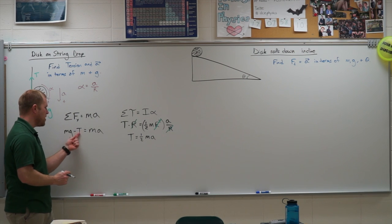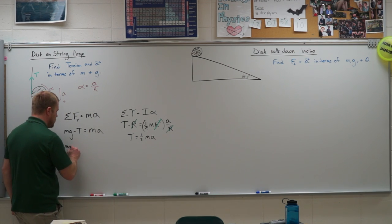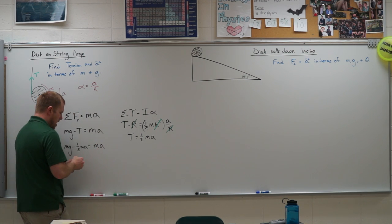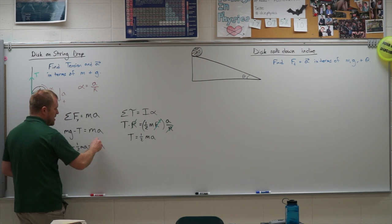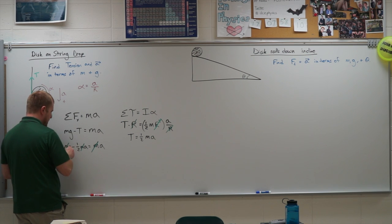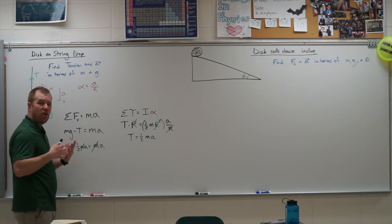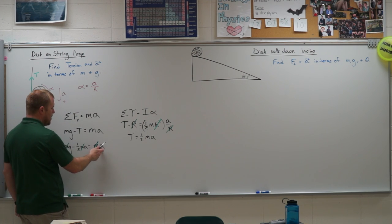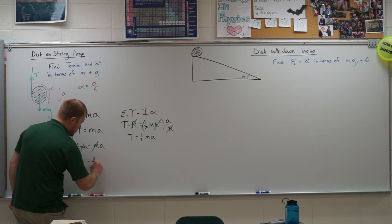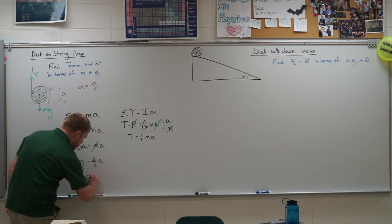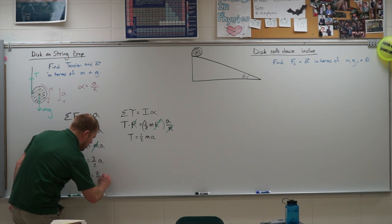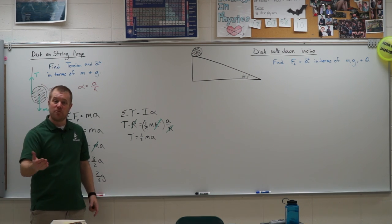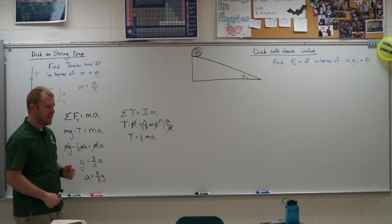Because the string is connected at the outer radius, all the R's cancel out, and I see that tension equals one-half MA. Substituting that into the linear equation gives mg minus one-half MA equals MA. The masses cancel, and solving for acceleration: g equals A plus one-half A, which is three-halves A. So the acceleration is two-thirds g. It is less than g because the object is not in free fall - the tension is holding it back.